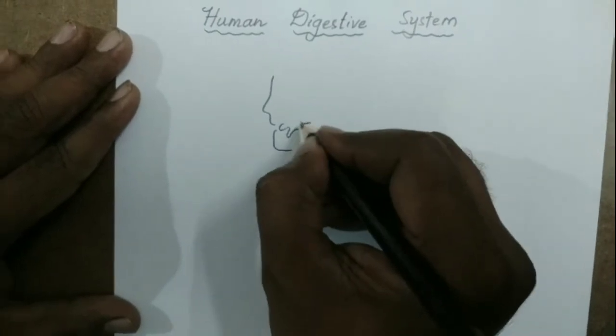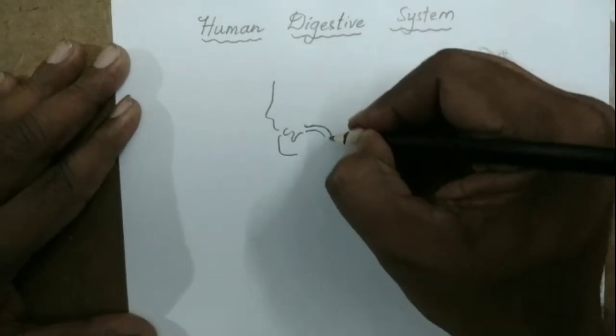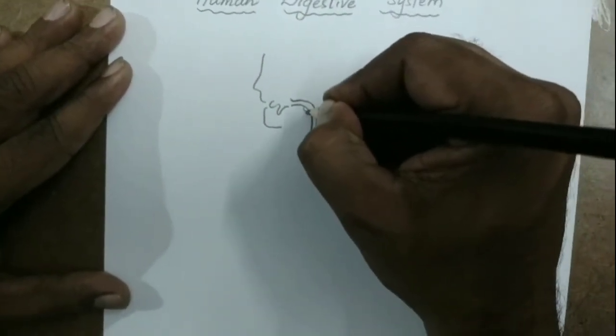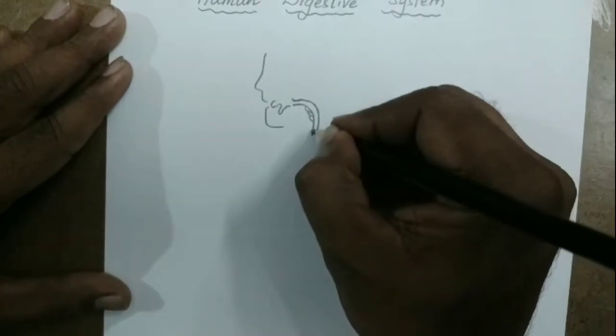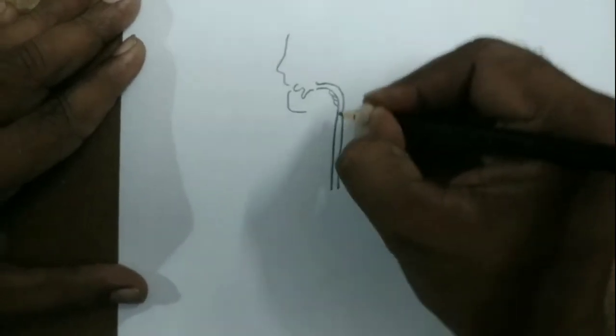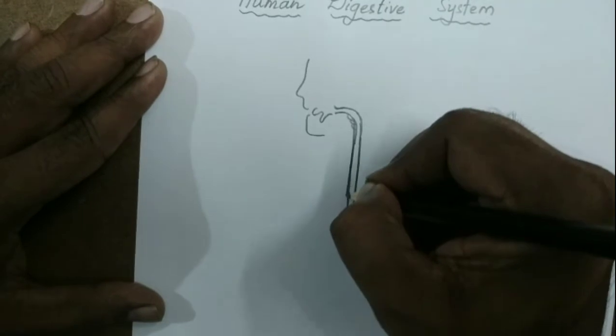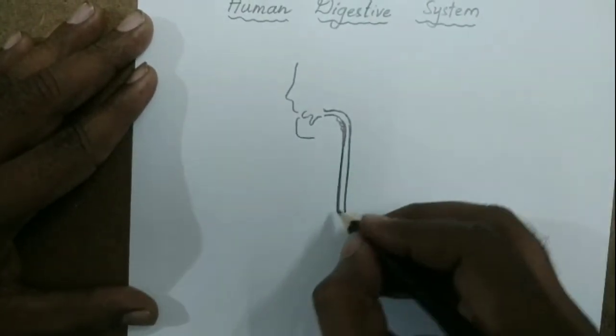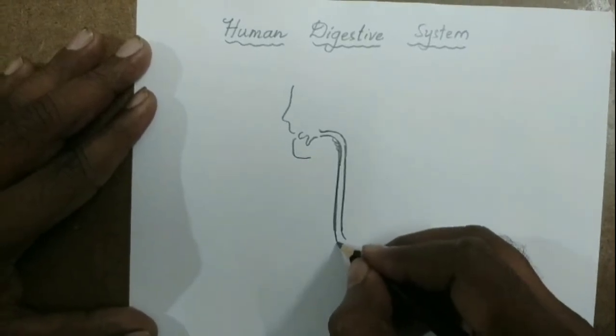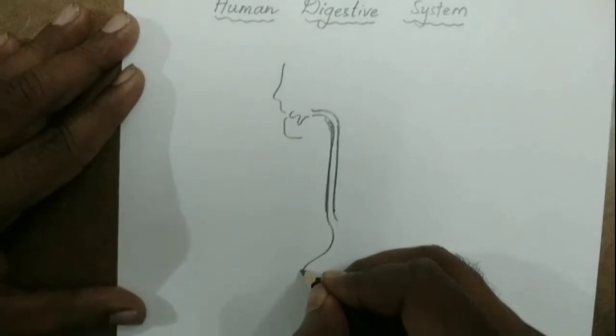Then draw the epiglottis, then draw one small tubular structure called the esophagus. And there is the pharynx. This tube-like structure is called the esophagus, then this esophagus is connected to the stomach. The stomach is a sack-like structure.